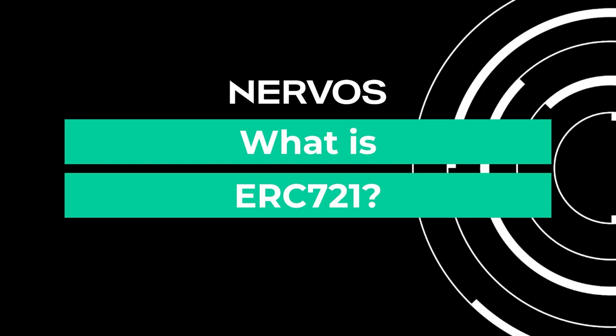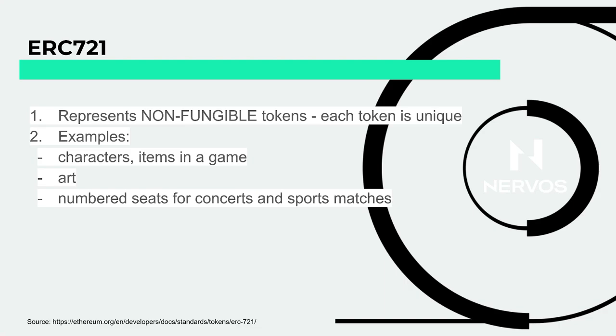Now let's talk about ERC721. ERC721 is a standard for NFTs — the most popular standard for NFTs. NFT means non-fungible token, which means each token is unique. You cannot simply exchange one NFT with another because they have different value. It's not like gold where you can trade one-to-one. This is more like everything is unique — you can have a sword that is very common, but also a sword in your game which is super rare. Would you exchange them one-to-one? Probably not, because they have different value. This is where NFTs come in.